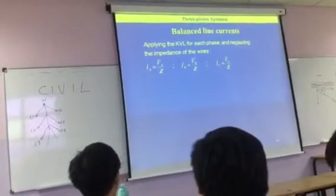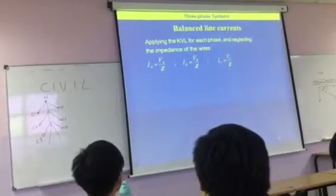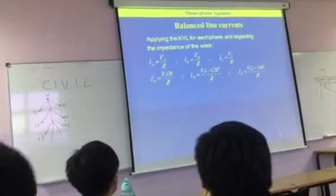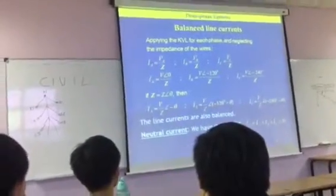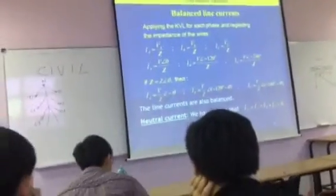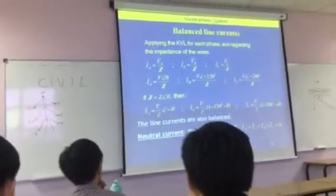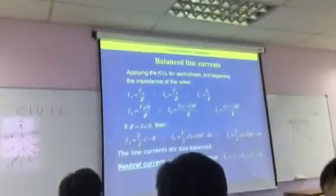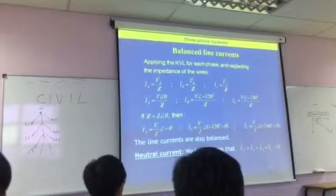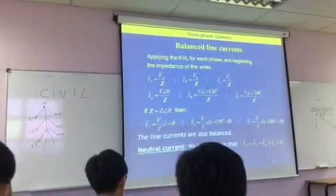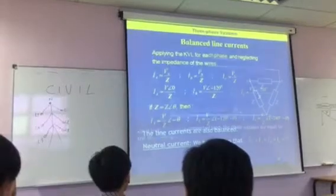Using Kirchhoff's law for each phase and neglecting the impedance of the wires, we're assuming it's going to be 0. What we get is balanced line currents as well. What we're saying is that for the balance, we should basically get 0 for the neutral current.